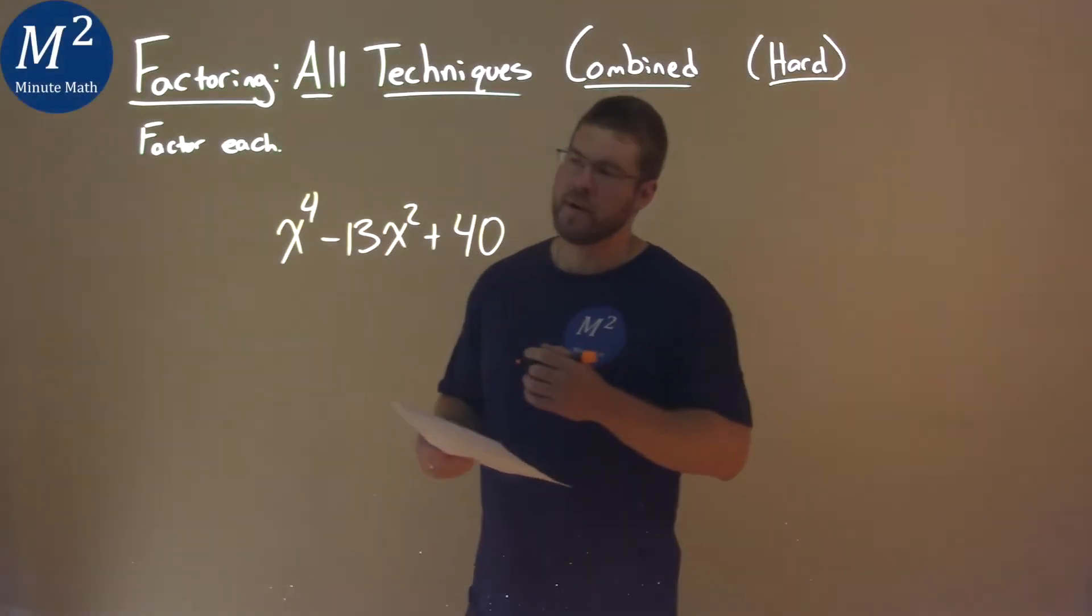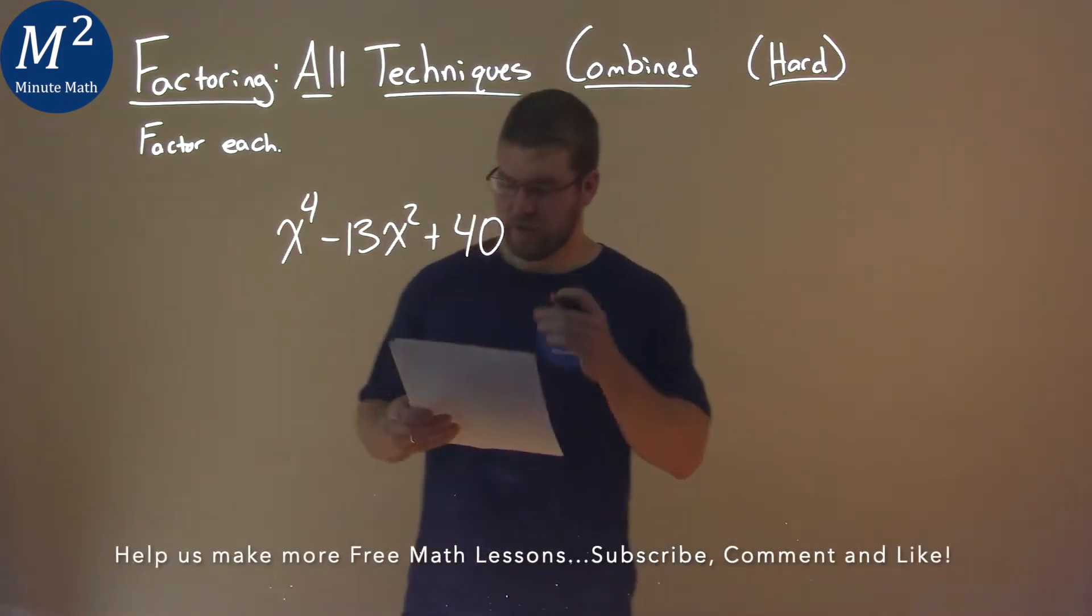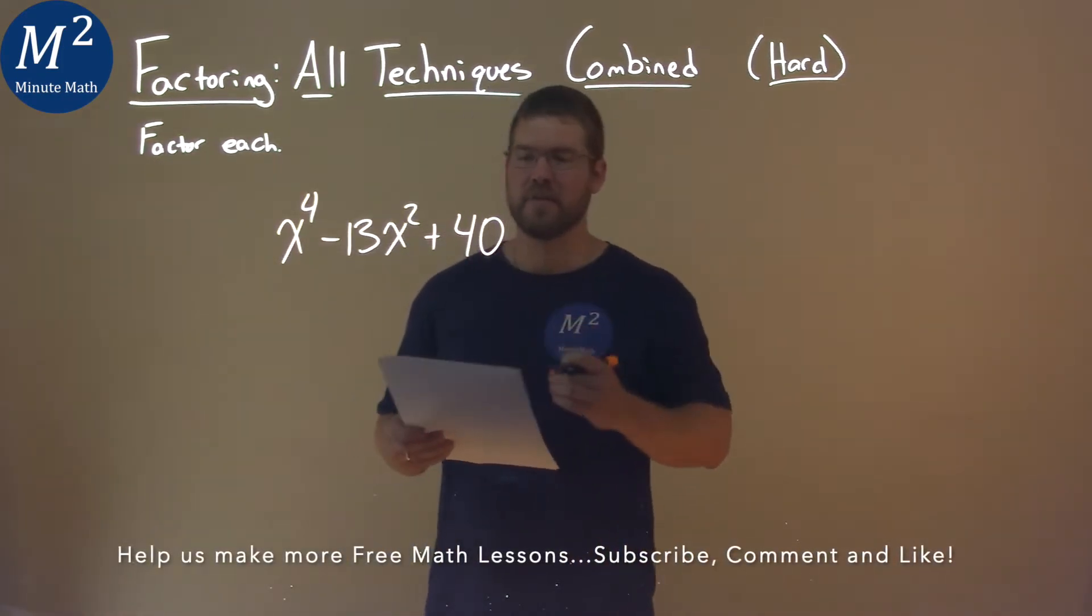We're given this problem right here: x to the fourth minus 13x squared plus 40, and we need to factor this completely.